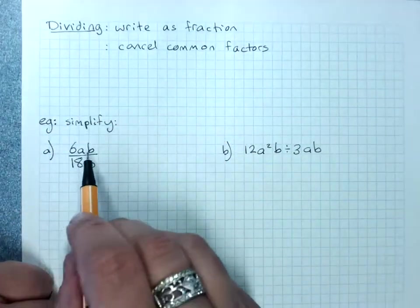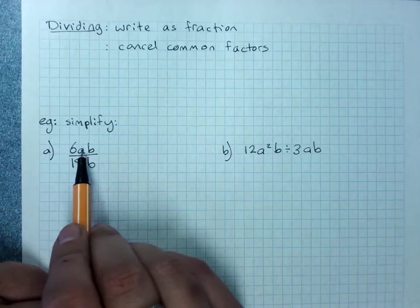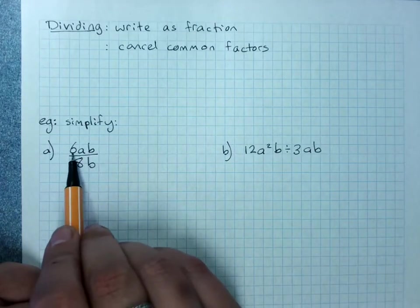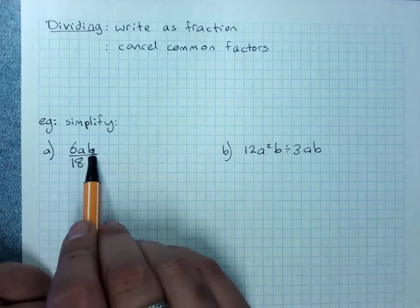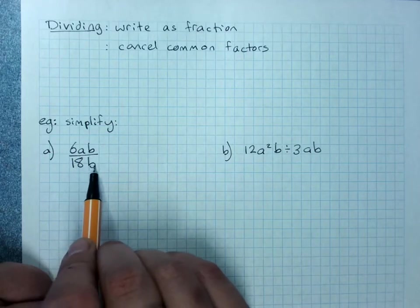I can write this any, these are all factors. 6 is a factor, a is a factor, b is a factor, because the only thing happening between these is times. Same here. 18 is a factor and b is a factor. And factors of 18 include 6 and 3.